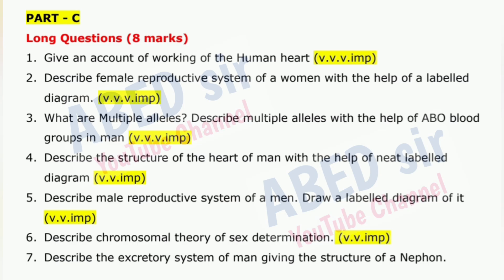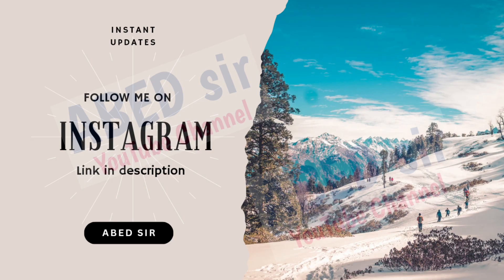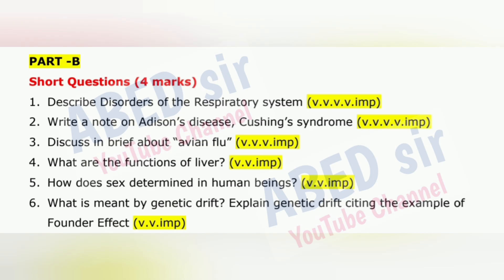On screen you may see each section's important questions. For long questions, write down your answer up to three sides of pages and, depending on the question, write down the definition with example, explanation with diagram and tables. For short questions, write down your answer on one side of the page and, depending on the question, write down the definition with an example, explanation with diagram and table.